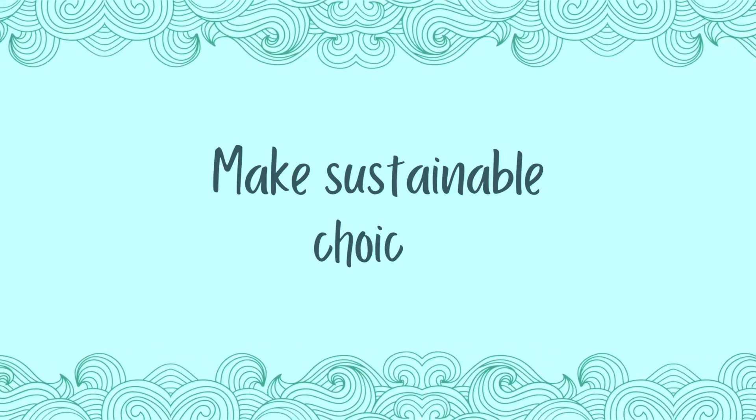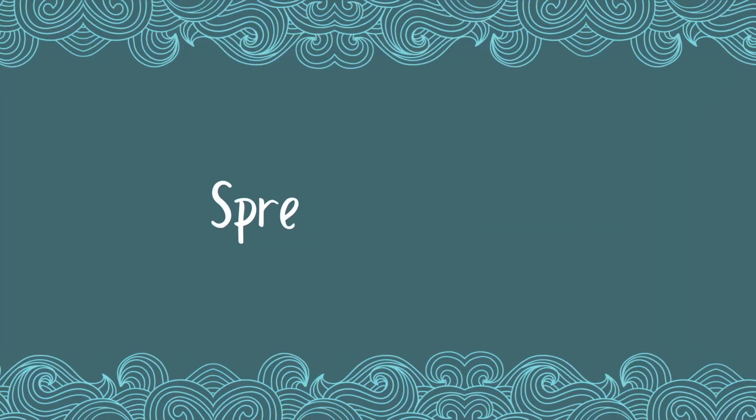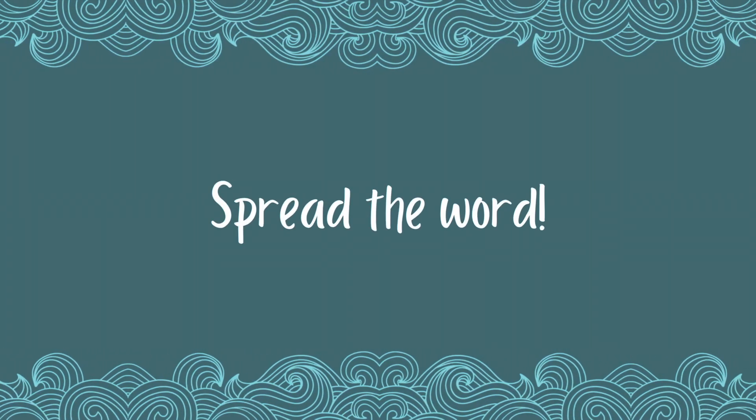Another way we can reduce CO2 emissions is to make sustainable choices. Choosing products that are made with sustainable materials and produced in an environmentally friendly way can help reduce our CO2 emissions. And an important tip: spread the word. Share information about ocean acidification and what individuals can do to reduce their carbon emissions with your friends, family and co-workers. The more people that are aware of this problem and are able to take action, the greater the impact will be.